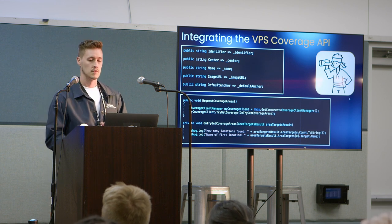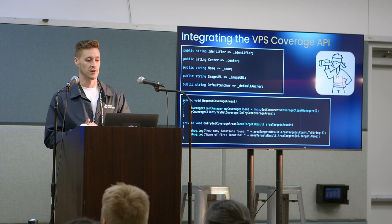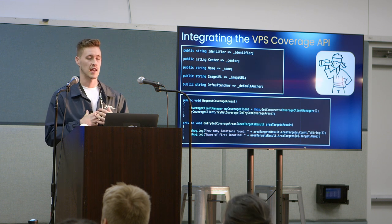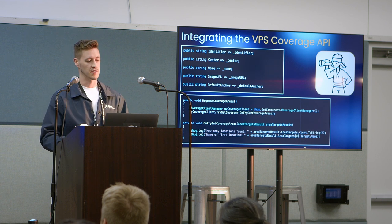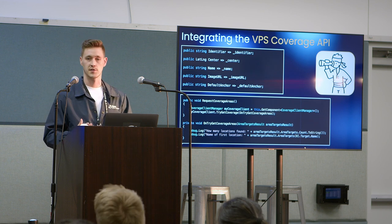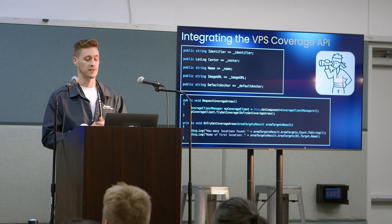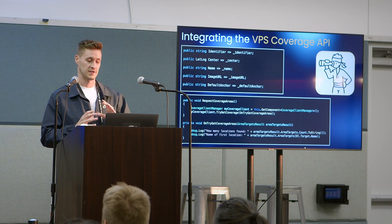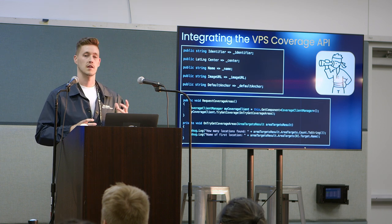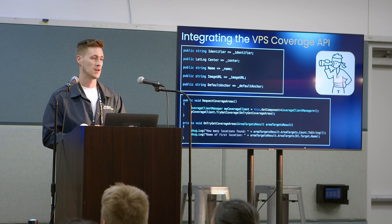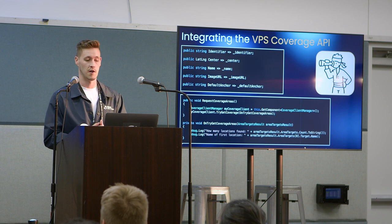Now that we have the map in our scene, we want to populate it with locations around us. We do this using the VPS Coverage API. This allows you to find locations that Niantic has data and knowledge of in your surrounding area. Key fields we track for every location include an identifier, latitude/longitude, the name of the location, an image, and the default anchor. In about four to ten lines of code, you can get locations that Niantic knows near you and return those to populate your map.